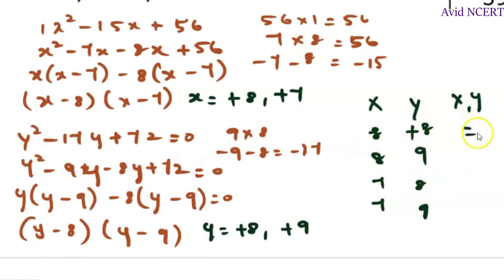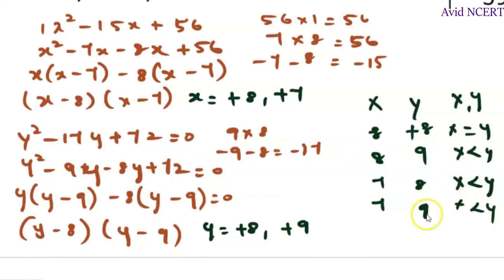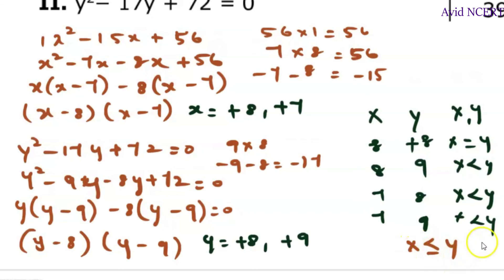Here it is equal which is x equals y. And here x is less than y. Here x is less than y. And again, it is x is less than y. So the answer is x is less than or equal to y.